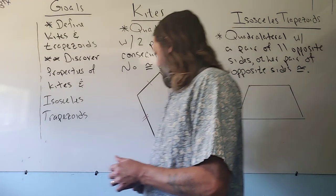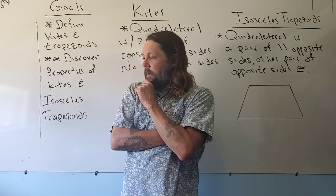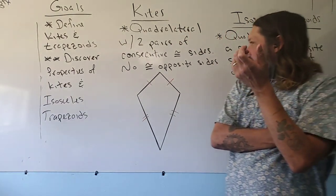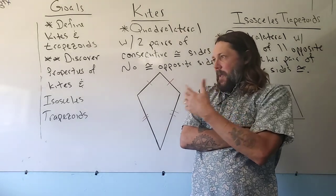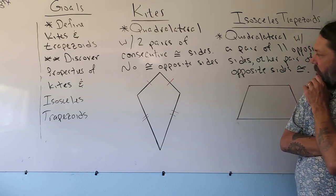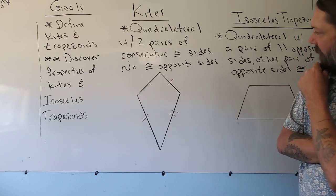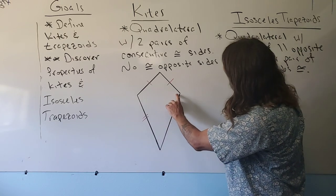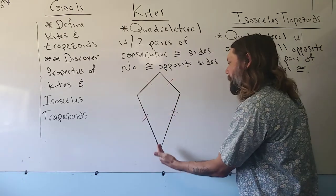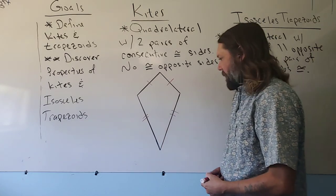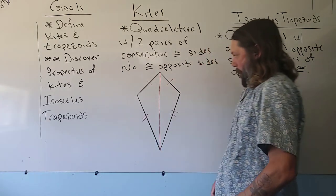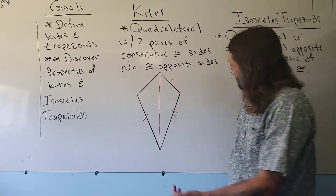Our argument technique falls back into finding identical triangles and then understanding what that implies about the shape. We don't have any congruent triangles yet, so let's figure out how we can make identical triangles. If I connect these vertices — I couldn't argue the triangle above is the same as below that way — but connecting these other vertices, I can very quickly say I have two identical triangles by side-side-side.